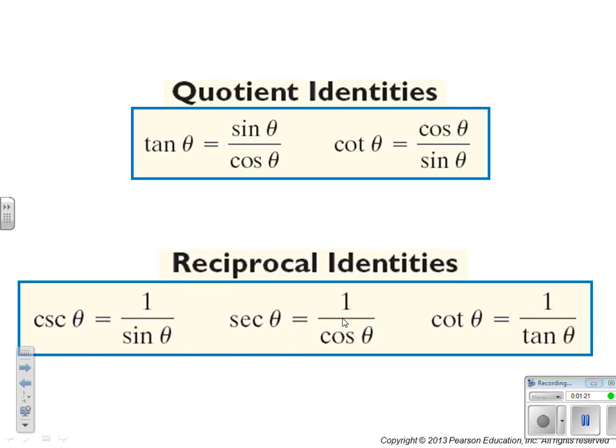And then we have our reciprocal identities: cosecant is 1 over the sine, secant is 1 over the cosine, and cotangent is 1 over the tangent.